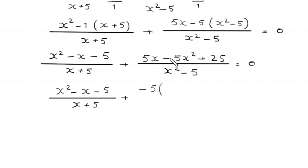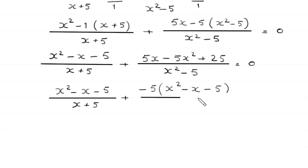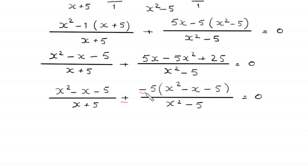When we divide 5 times x by negative 5 we get negative x, and when we divide plus 25 by negative 5 we get negative 5, divided by x squared minus 5, is equal to 0. Now here we have a plus sign and here we have a negative sign, so this plus and minus becomes minus.